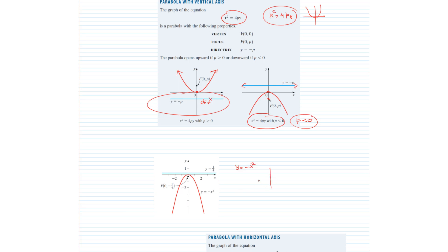Let us see a more precise diagram for the parabola y = -x². The parabola is along the y-axis and opens downward, because the coefficient of x² is negative. We can quickly see that the focus of the parabola is at point (0, -1/4), while the directrix is the line y = 1/4.